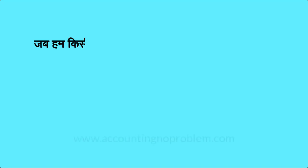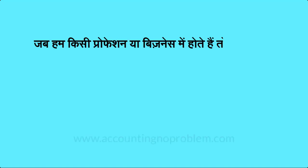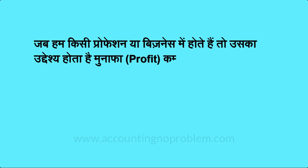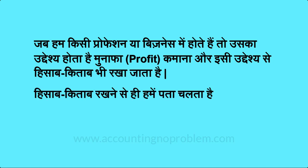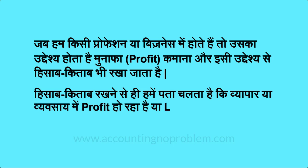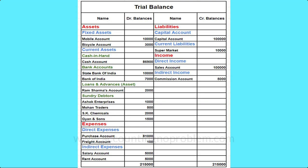जब हम किसी Profession या Business में होते हैं तो उसका उद्देश्य होता है मुनाफा यानि Profit कमाना, और इसी उद्देश्य से हिसाब-किताब भी रखा जाता है। हिसाब-किताब रखने से ही हमें पता चलता है कि व्यापार या व्यवसाय में Profit हो रहा है या Loss। आपको याद होगा कि हमने Trial Balance Sheet में सभी Accounts को उनकी प्रकृति के हिसाब से Liabilities, Assets, Income और Expenses में बाँटा था।